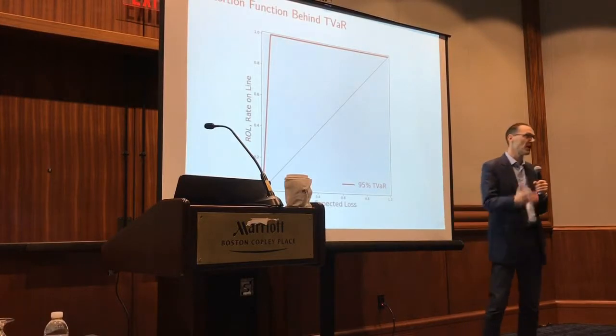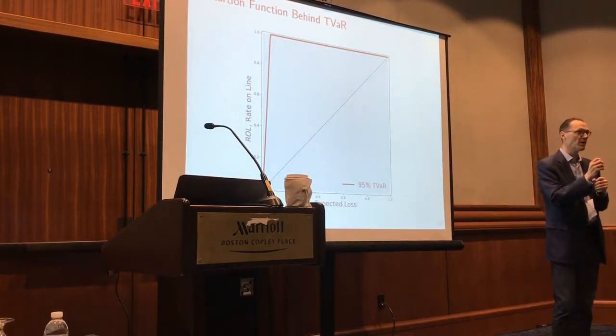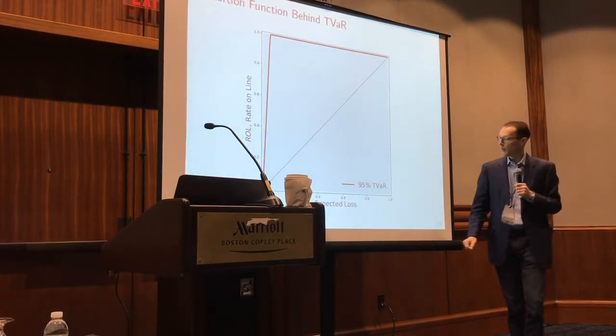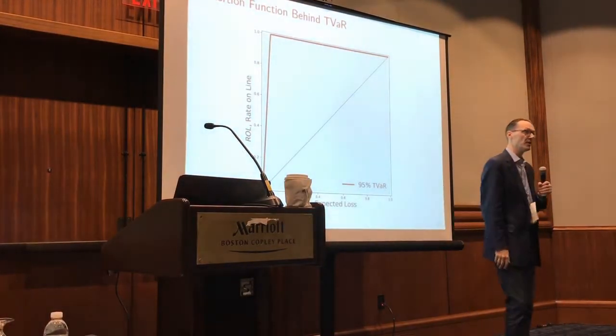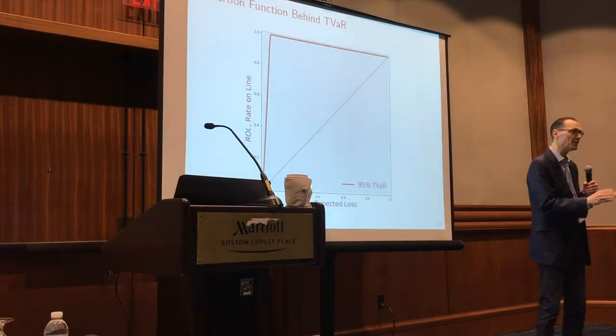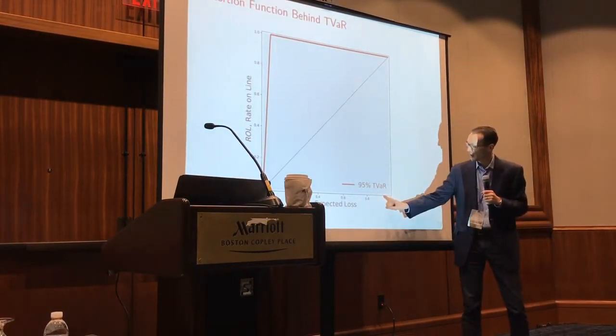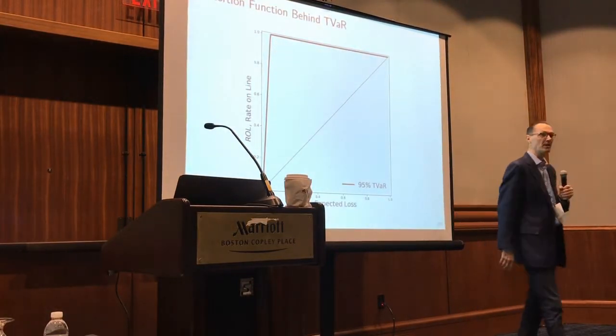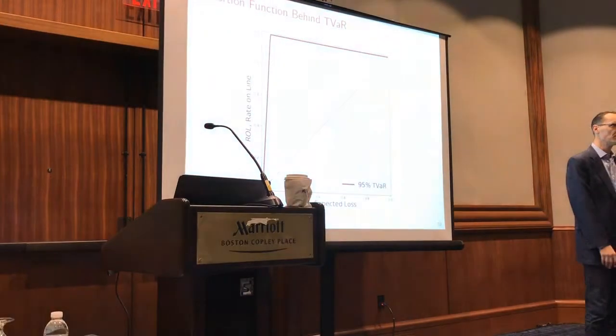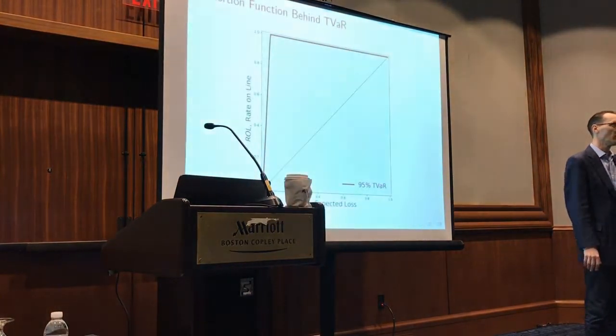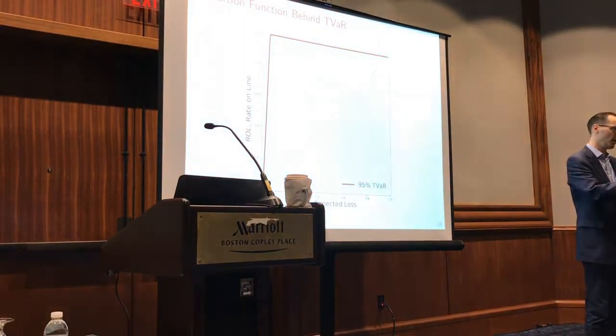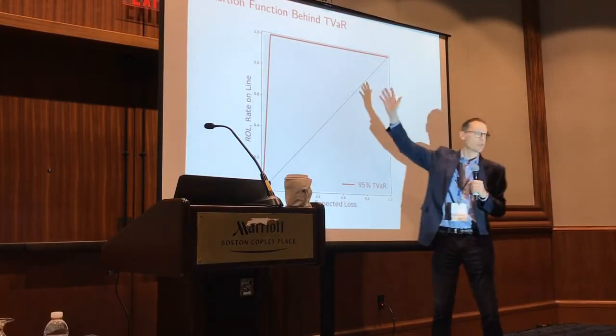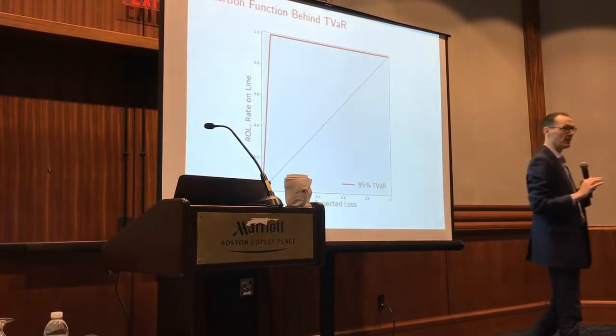Think about what does that do. Let's say my 95th percentile is $10 million. And I'm trying to price a layer, a million x $5 million. Well, what am I going to do? I'm going to run my simulation machine. Every single simulation I get is going to be greater than $10 million. Because I'm going to pick random numbers between 95 and 100%. So I'm going to look at a million x five and I'm going to go total loss. Every single time I get a total loss. So I'm just going to say I want 100% rate online for that. So that's the solution. That's what this is telling you is it's 100% rate online. It's not free cover.